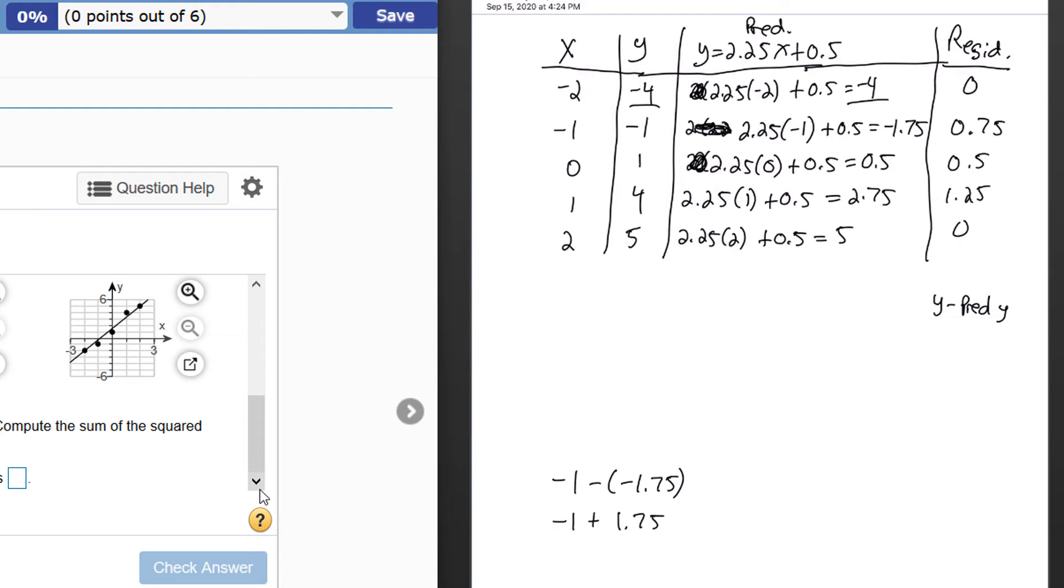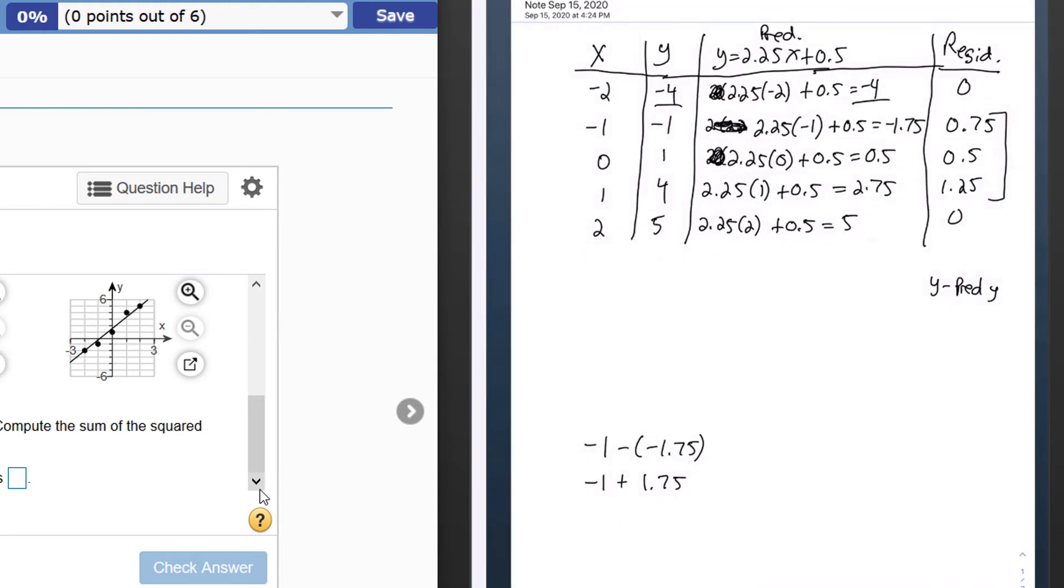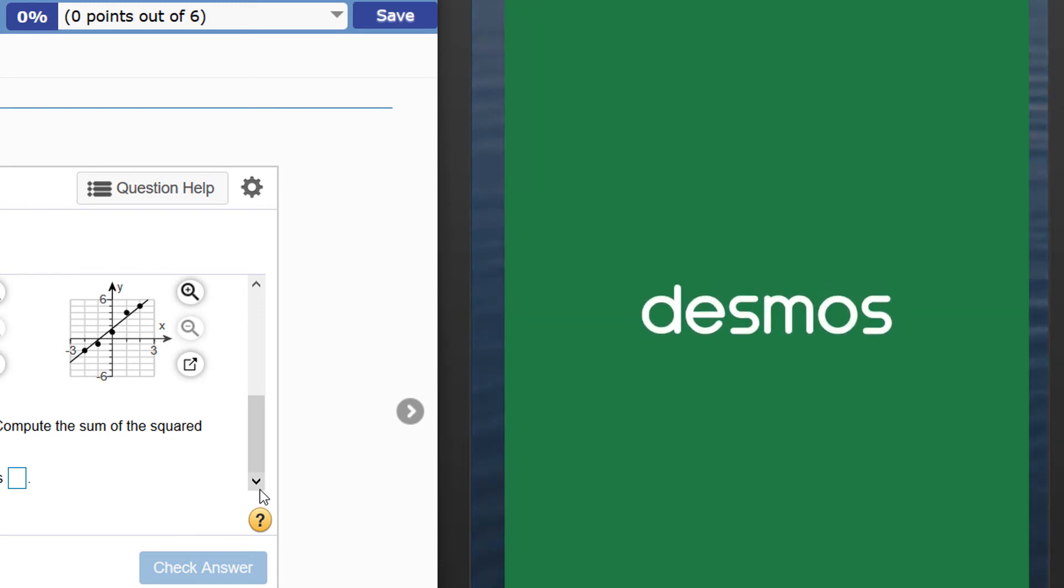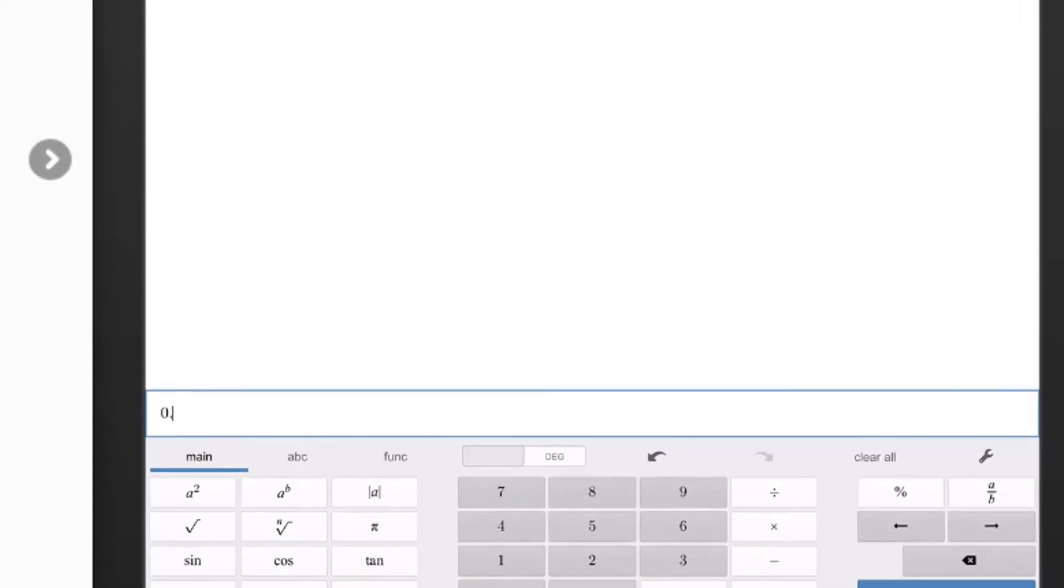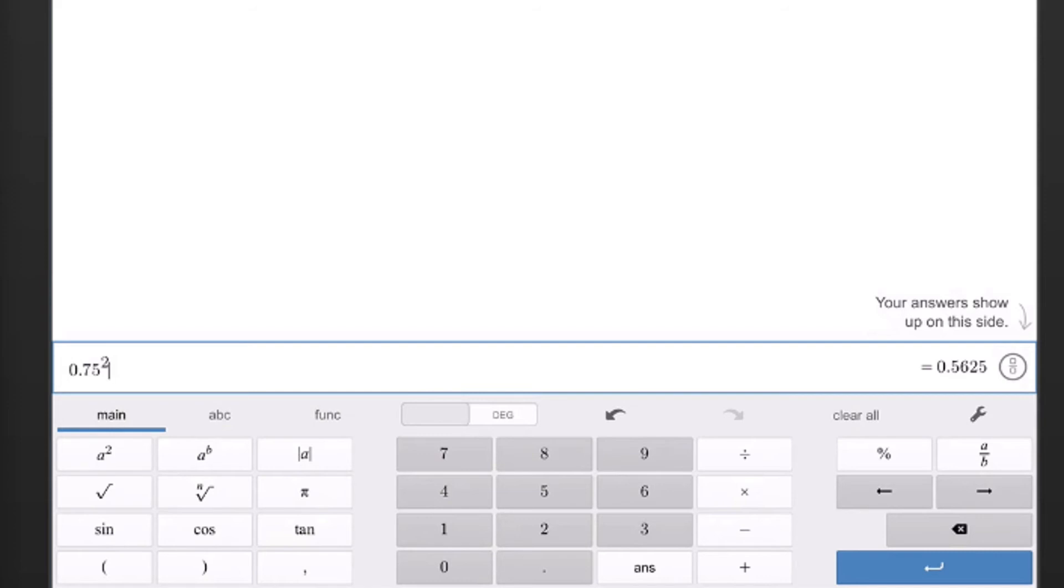There are the residuals for this line, not the least squares regression line, just the line that went through those two points. To get the sum of the squared residuals, I need to square each of these numbers in the right-hand column and then add them together. I've got zero and zero—those don't affect the sum—but these three numbers do. So I'm going to go ahead and do this on the Desmos scientific calculator: 0.75 squared, 0.5 squared, and 1.25 squared.